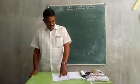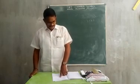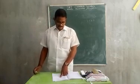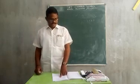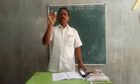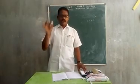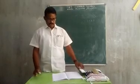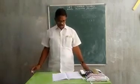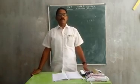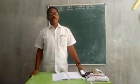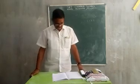Give any five examples of a solid state substance. Stone, piece of chalk, duster, table, blackboard. All these are examples of solid state substances.